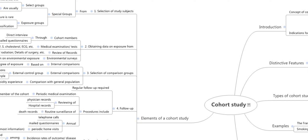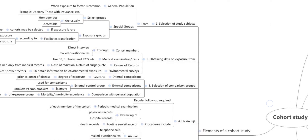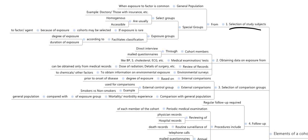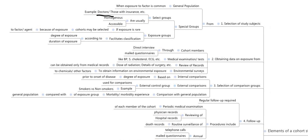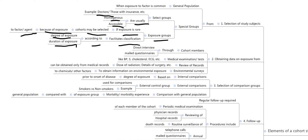Now the elements or steps in a cohort study. First is selection of study subjects — from the general population and special groups. The general population is used when exposure to the factor is common. Special groups include select groups such as doctors or those with insurance. These select groups are homogeneous and accessible. If exposure is rare, cohorts may be selected because of their exposure to a factor or agent, which facilitates classification according to the degree and duration of exposure.